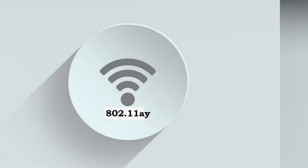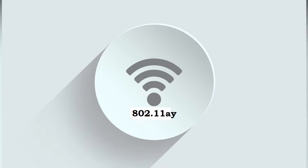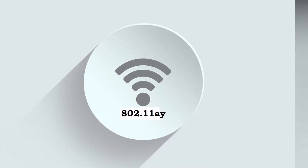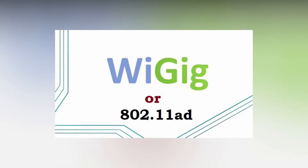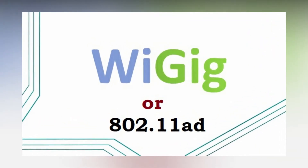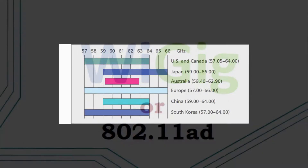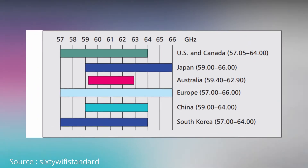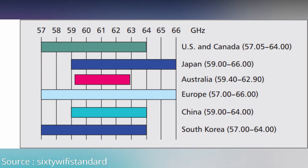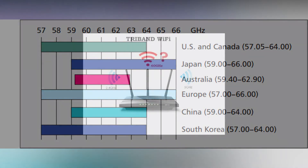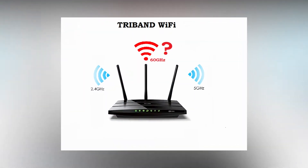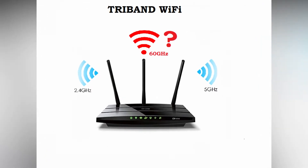The latest Wi-Fi standard 802.11ay aims to push the boundaries of wireless connectivity even further than its predecessor 802.11ad, or WiGig. This 60 GHz is important because it's an unlicensed frequency band available everywhere in the world. At this frequency, there is a lot of bandwidth available to transfer more data much faster. You must be wondering: what is the need for an extra band while we already have 2.4 or 5 GHz bands available?